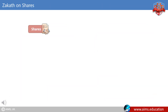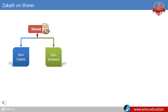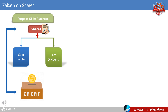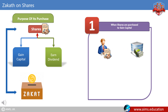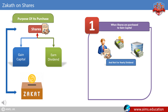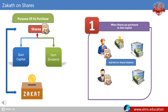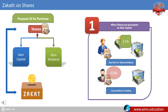Zakat on shares. Shares are usually purchased for two purposes: to gain capital and to earn dividends. Zakat payable on shares depends on the purpose of purchase. When shares are purchased to gain capital, Zakat will be paid on the market price of those shares. For example, Bilal purchases a share to gain capital. The market price of that share is $100. Since it was purchased for capital gain, it is considered a commodity for trading, so Bilal will pay 2.5% Zakat on $100.